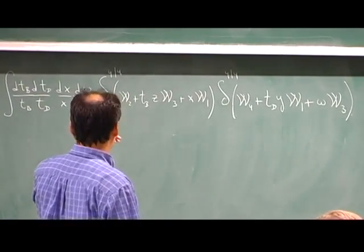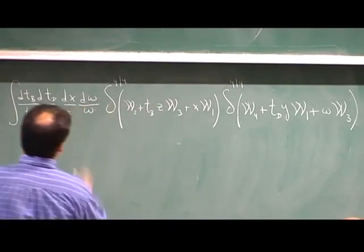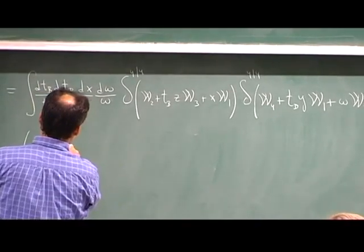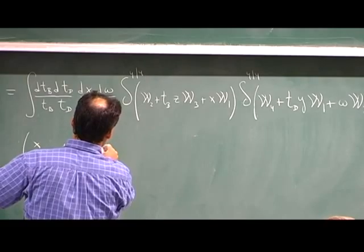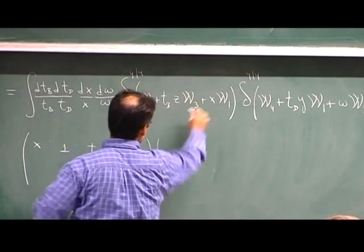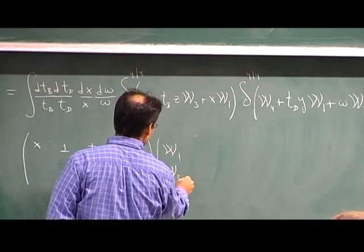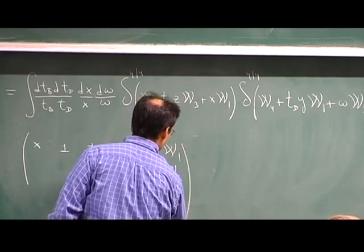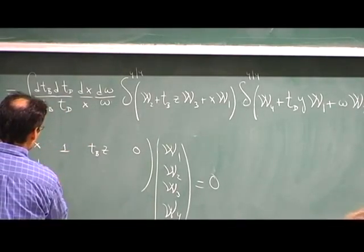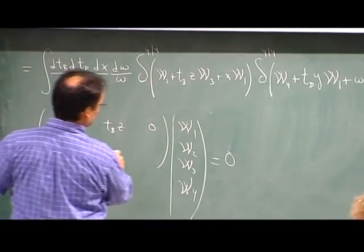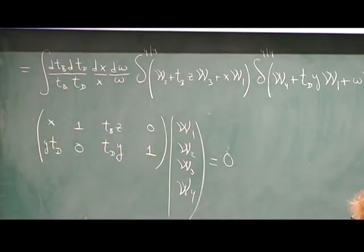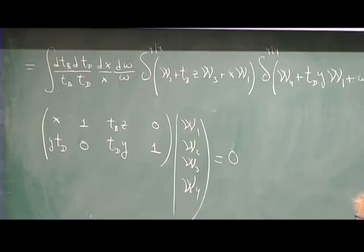The formula doesn't look very nice yet but it's supposed to be nice. Let's write the system of equations and see what happens. The matrix of equations is: row 1 is (1, T_b, z, 0) and row 2 is (y, T_b, 0, T_d), acting on the vector (W1, W_b, W3, W_d) or similar.